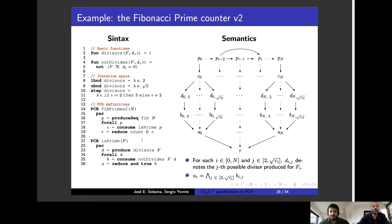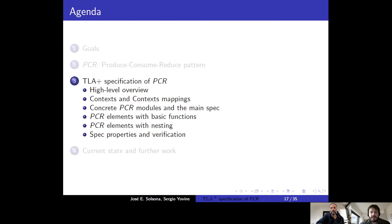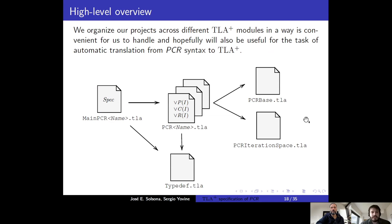A represents the results of the reduction of the reducer in the is-prime PCR. Hello everyone, my name is Jose and I'm going to show you our TLA Plus specification of the PCR concepts we have seen earlier. I'm going to discuss the high-level overview of our project. We organize our project across different TLA Plus modules. There is a PCR base module containing the principal definitions found in every PCR, and also a PCR iteration space module defining concerns related to the definition of iteration spaces. Every concrete PCR has its own module.